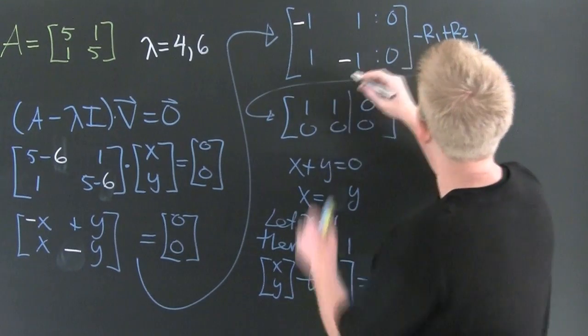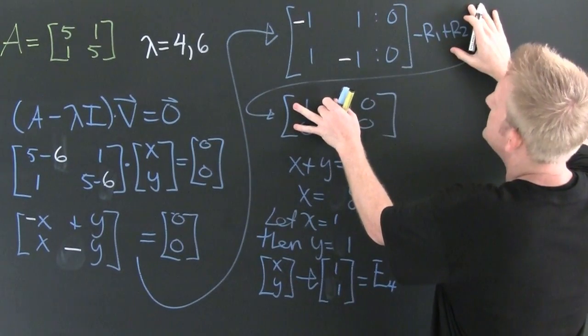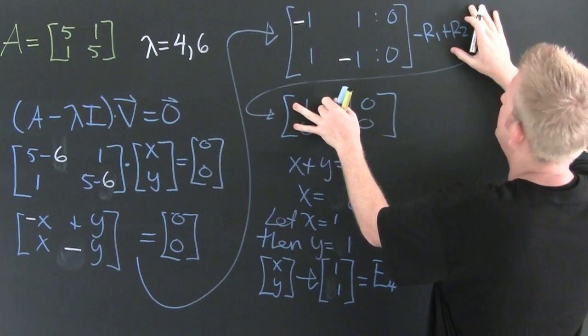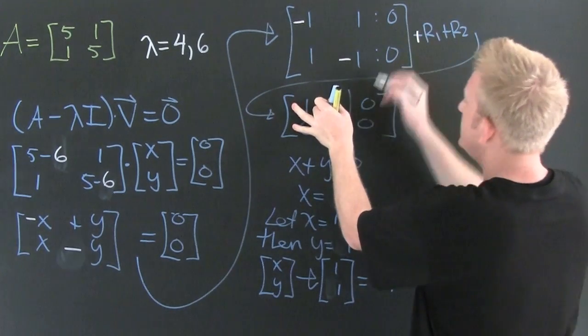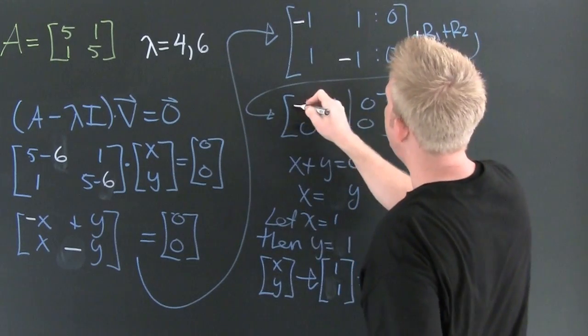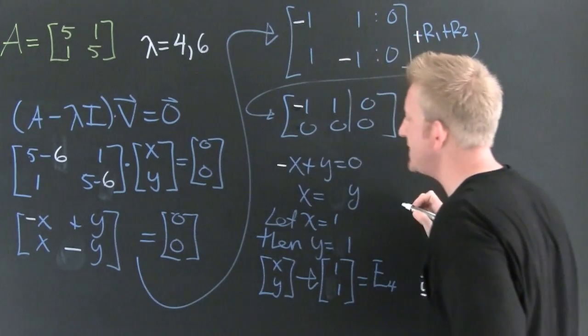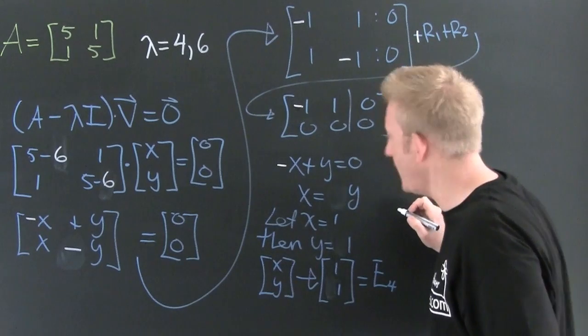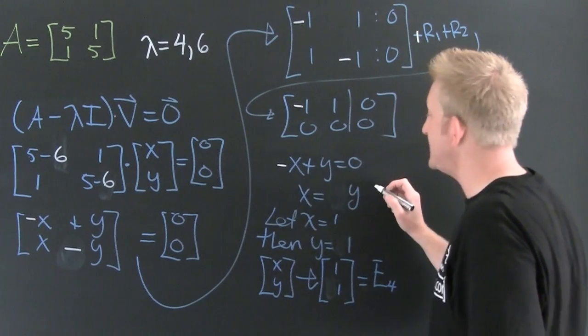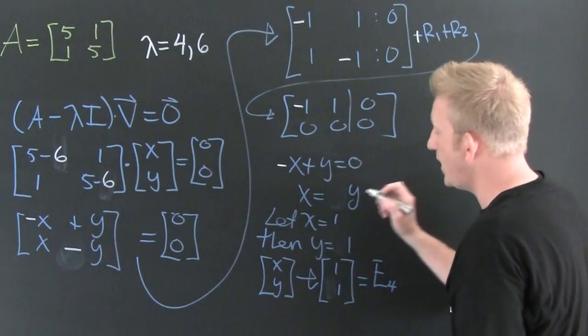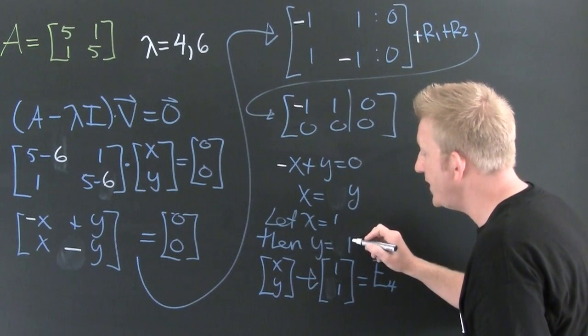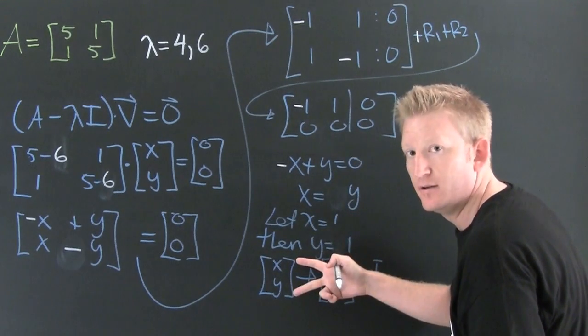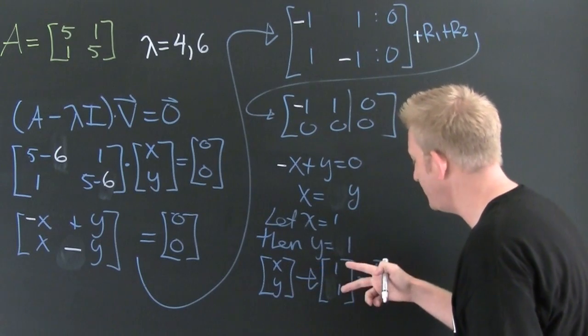So then I'm going to take row one and add it to row two. Here I'm just going to take row one and add it to row two, killing row two and leaving this guy like that. That means I'm gonna have minus x plus y. So then that says that x is equal to y. So I'm going to let x be 1 and then y is 1. So then my eigenvector is going to be 1, 1. And this was for eigenvalue 6.